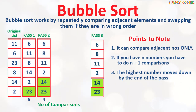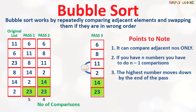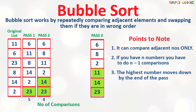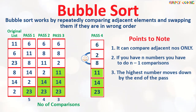In the next pass we need to compare the first 4 numbers only. The algorithm starts from the beginning again. 6 is compared with 8 — 6 is smaller so no change. Then 8 is compared with 11 — again no change. Next 11 is compared with 2 — since 2 is smaller, 2 moves up and 11 moves down. In the following pass we only take the first 3 numbers, doing 2 comparisons. 6 is compared with 8 — no change. Then 8 is compared with 2 — since 2 is smaller we swap the values.